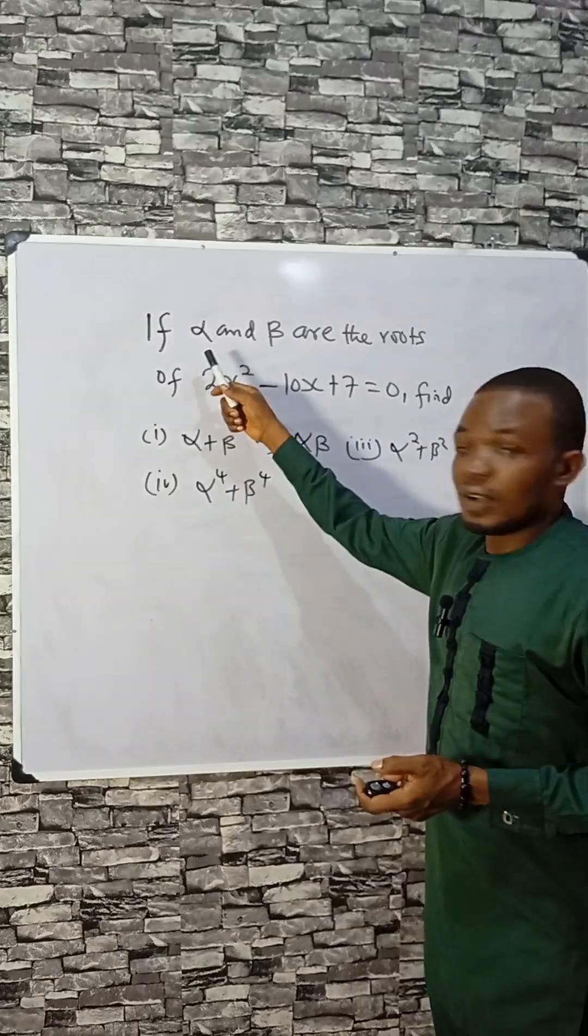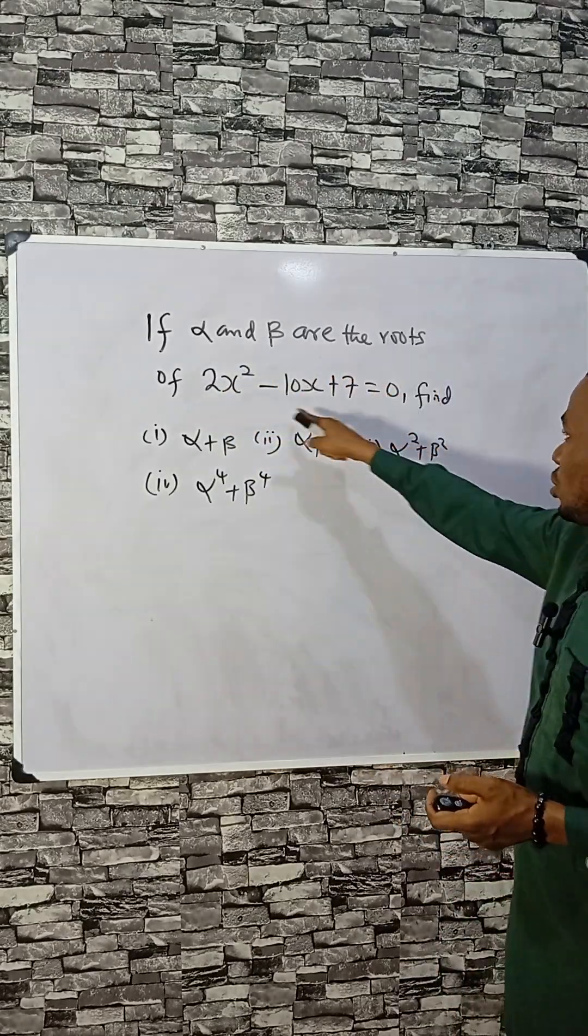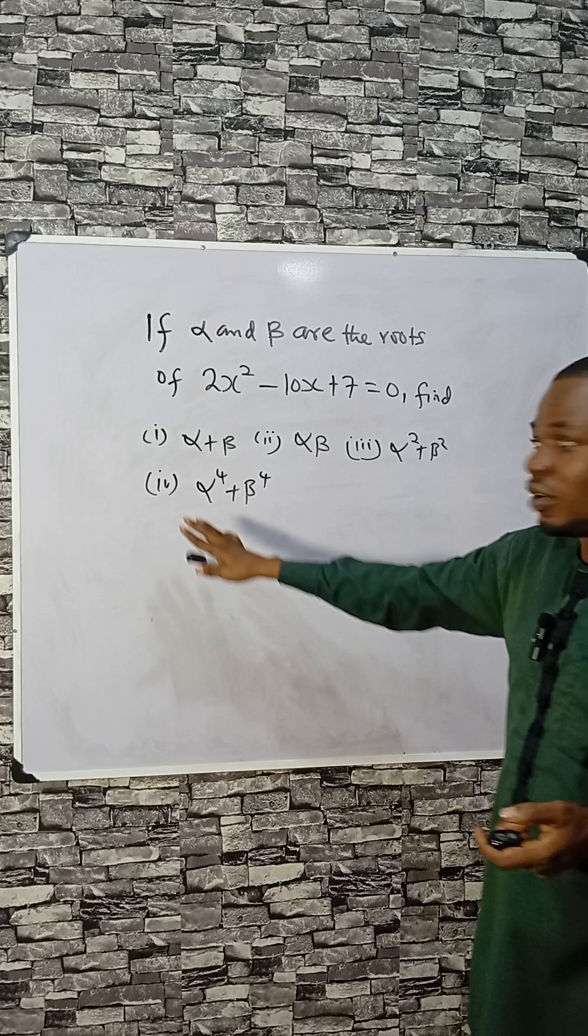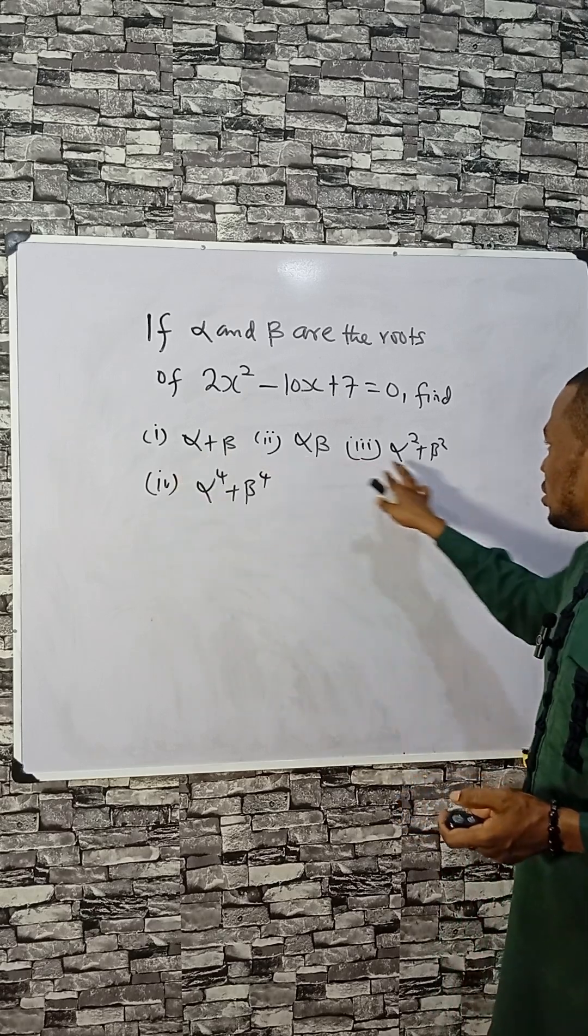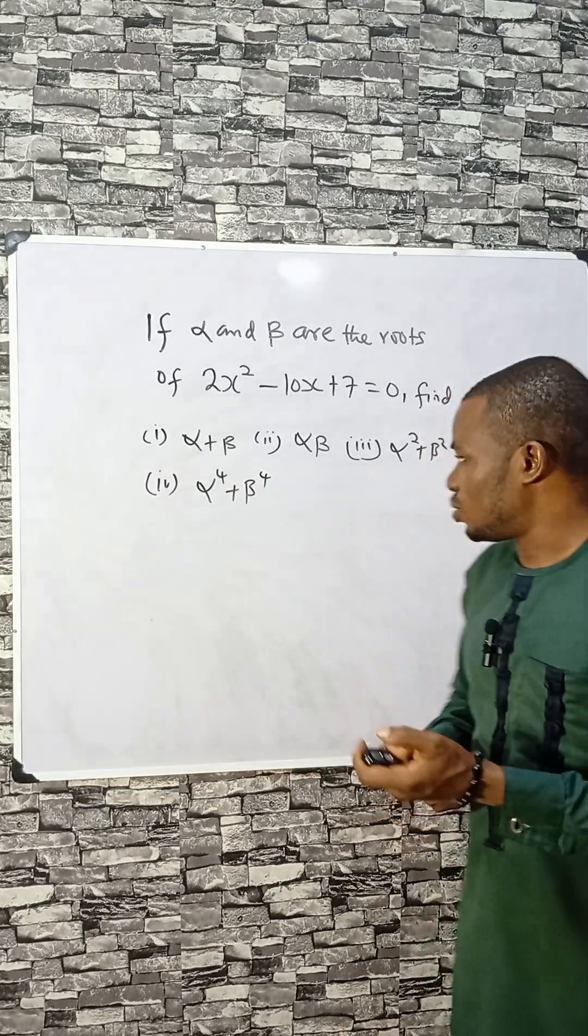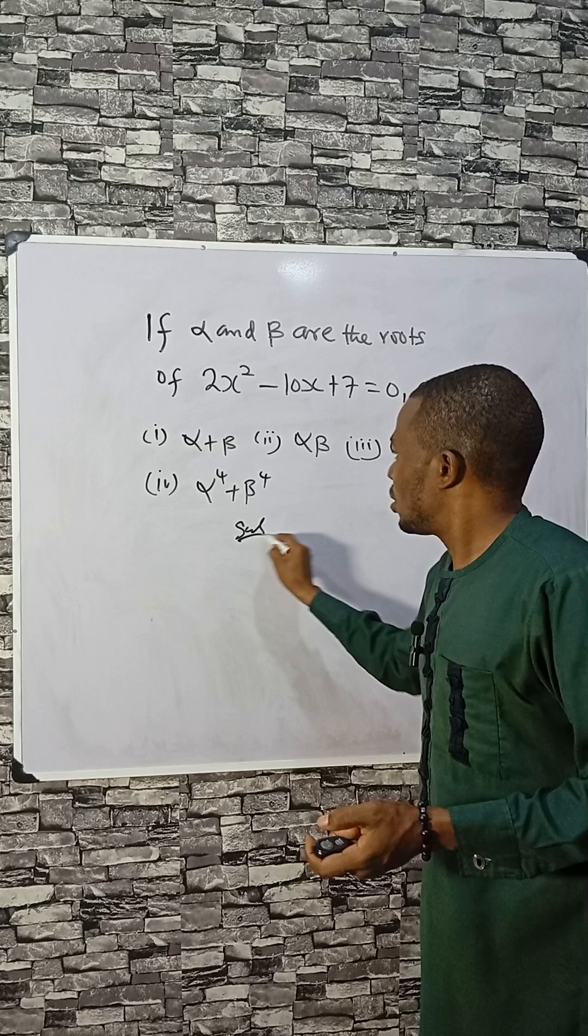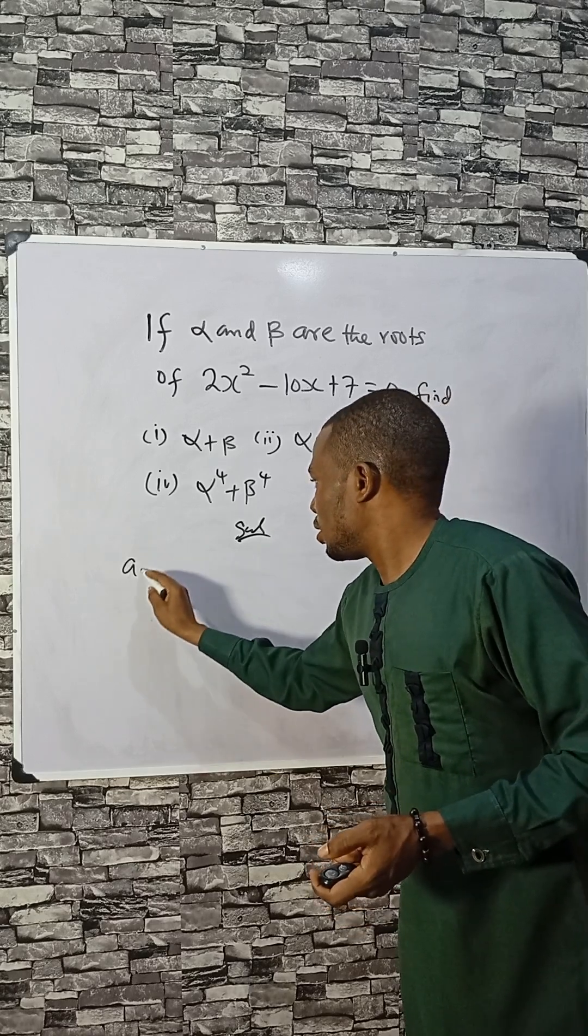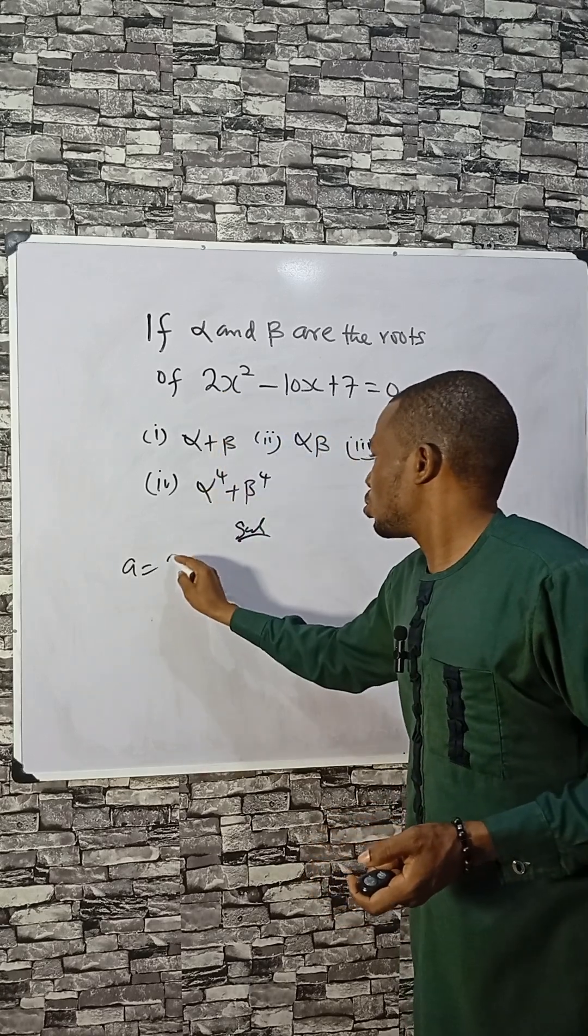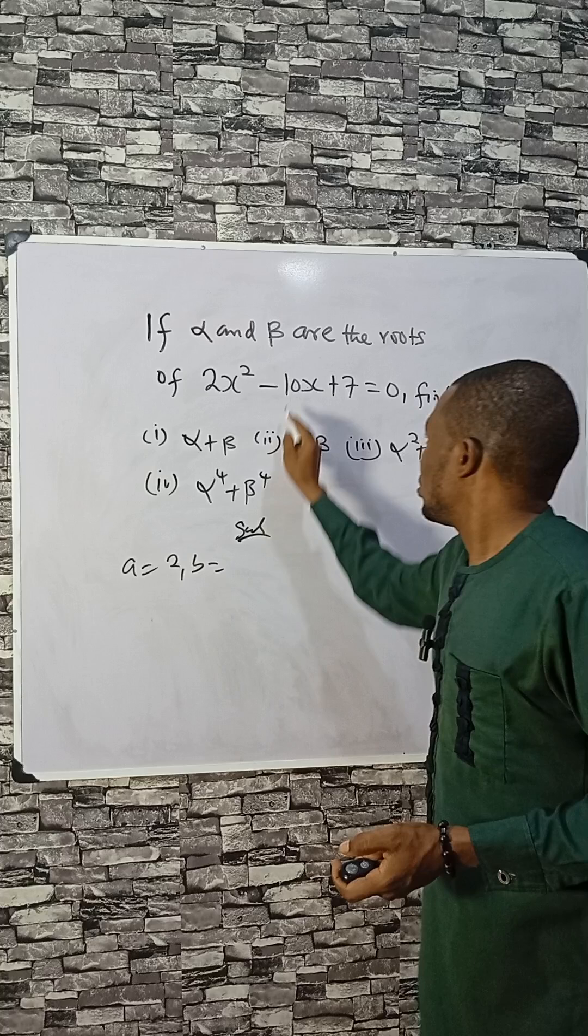Let's consider this: if alpha and beta are the roots of this equation, then we should be able to find the value of this, this, this, and this. Let's do this together. Now, in this equation A is 2, B is minus 10, and C is 7.